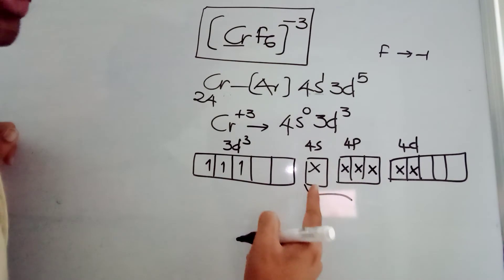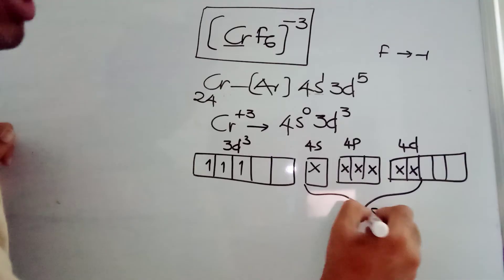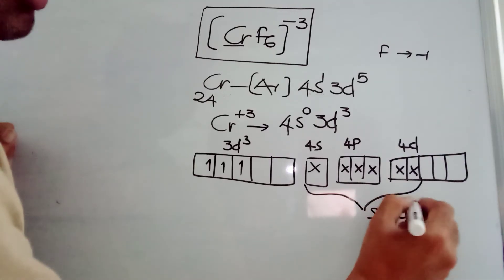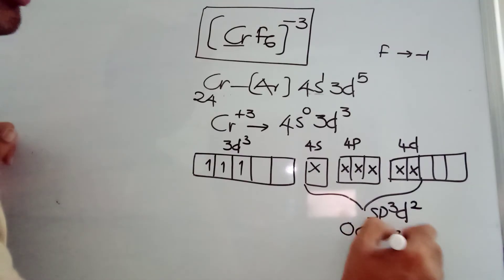1 S-orbital, 3 P orbitals, 2 D orbitals. The hybridization is SP3D2. When it is SP3D2 hybridization, it is square bipyramidal, or you can say it is octahedral.